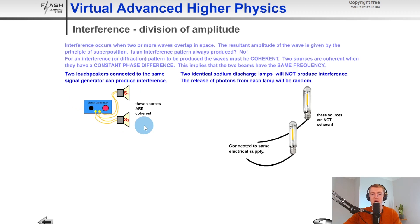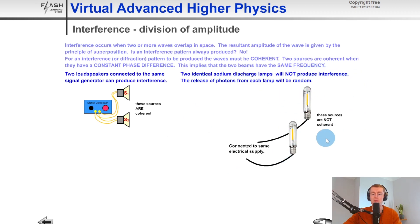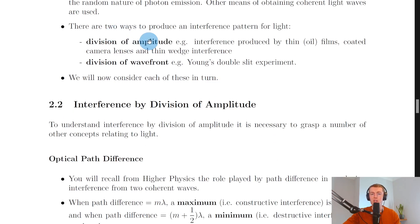Two loudspeakers connected to the same signal generator can produce interference because they're coherent — they produce waves of the same frequency. However, two identical sodium discharge lamps will not produce interference because the release of photons from each lamp is random. Regardless of whether they're connected to the same power supply, they're not coherent and the waves produced will have a different frequency.